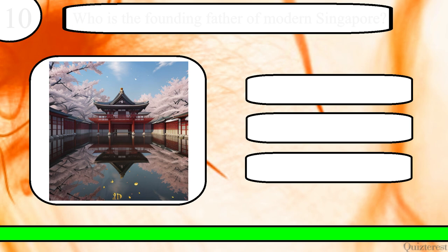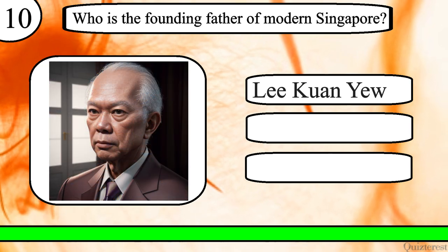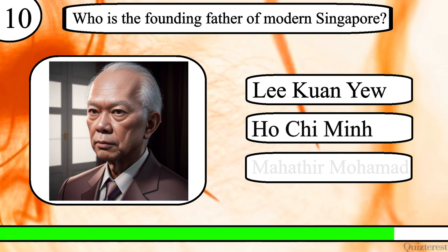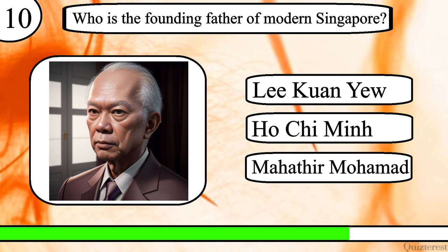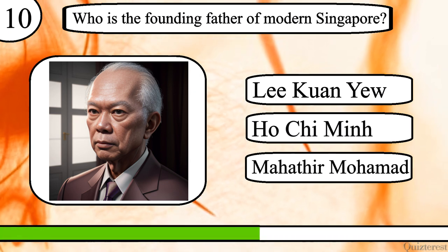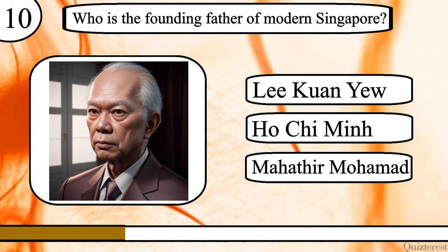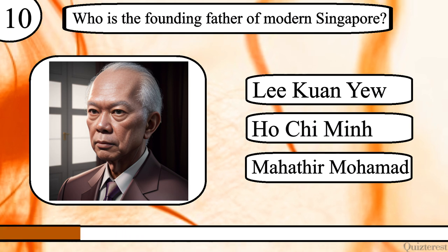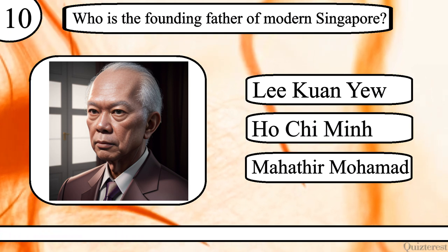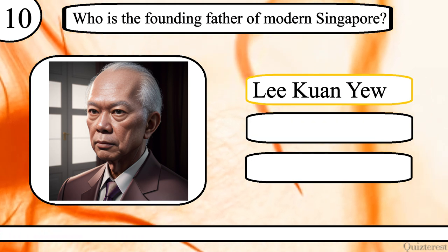Question 10. Who is the founding father of modern Singapore? Lee Kuan Yew, Ho Chi Minh or Mahathir Mohamad? The correct answer is Lee Kuan Yew.